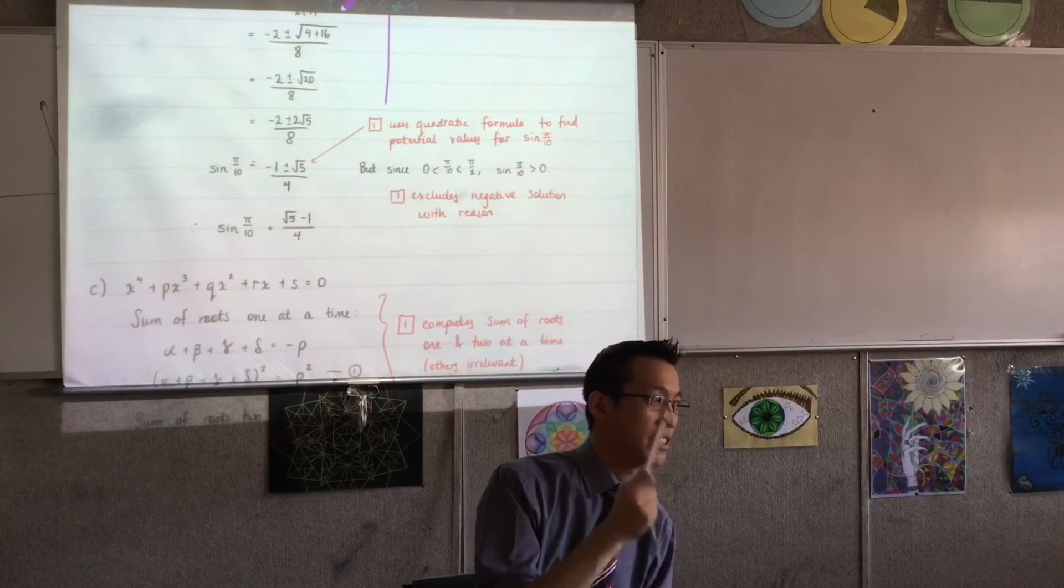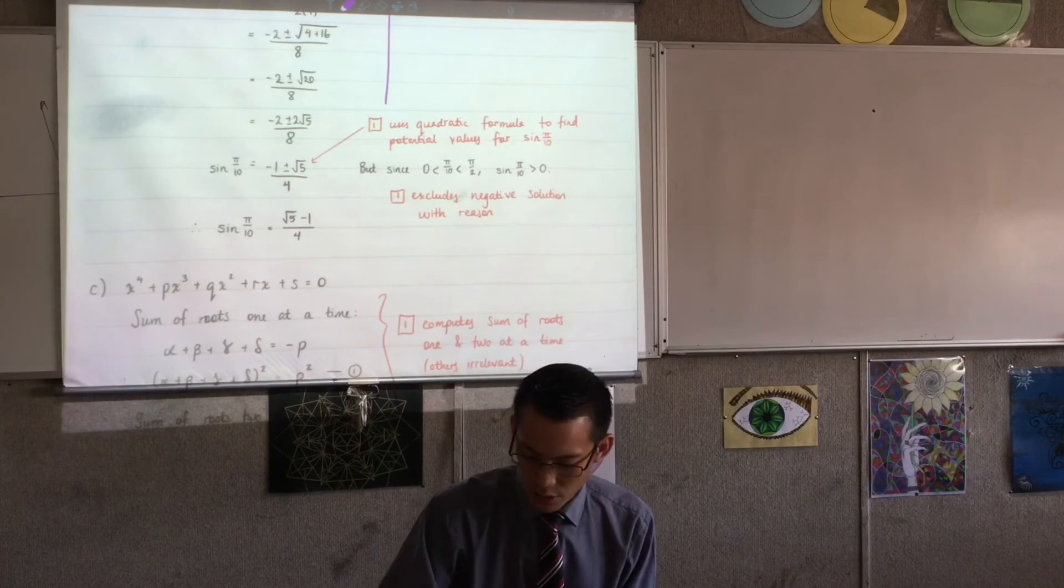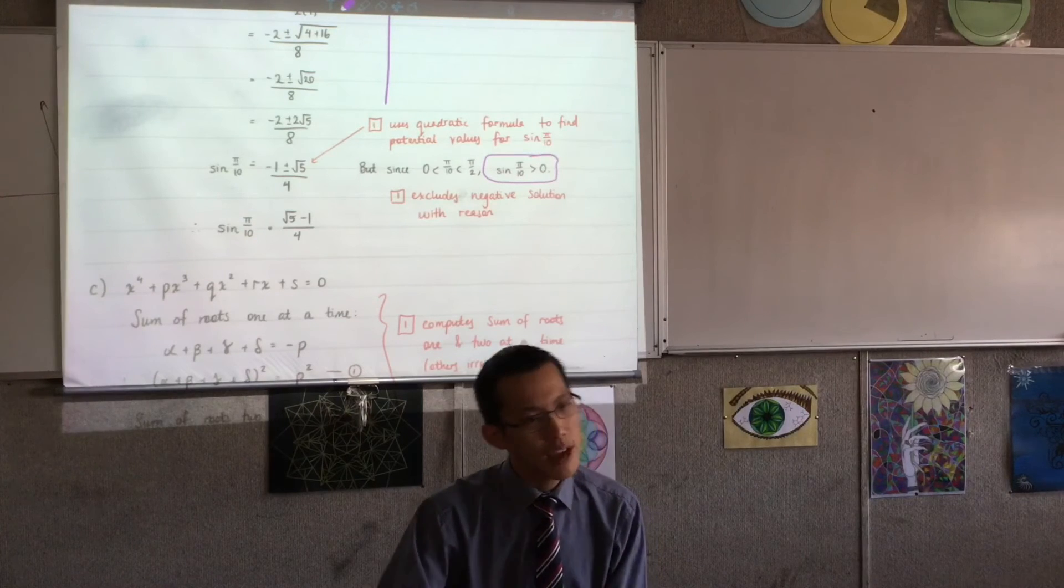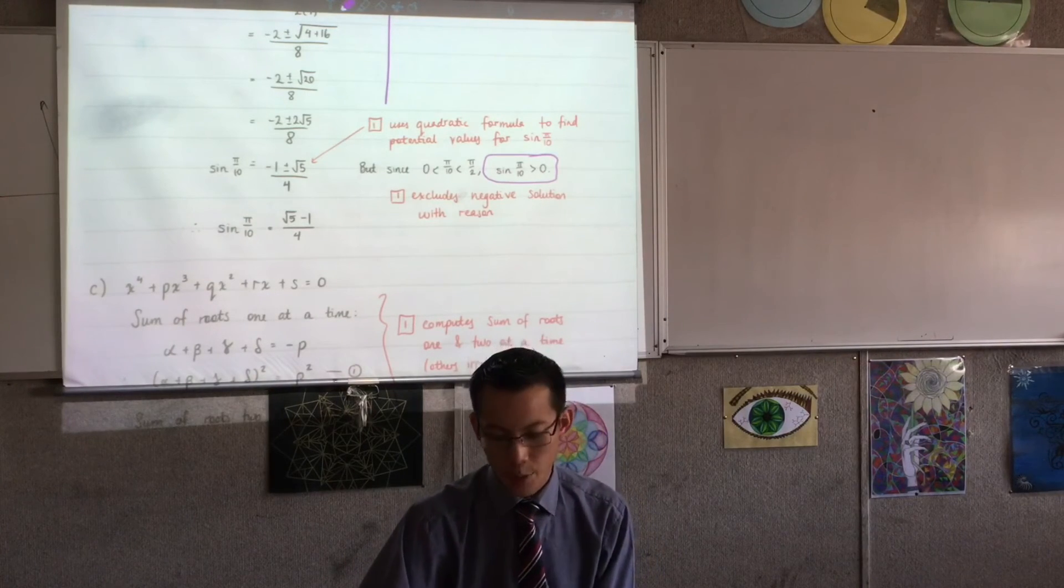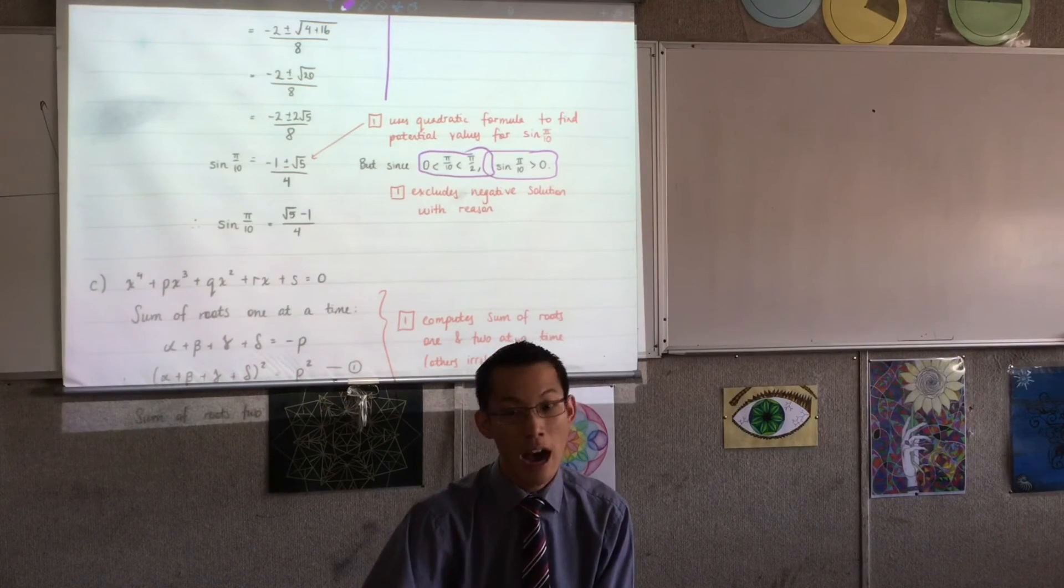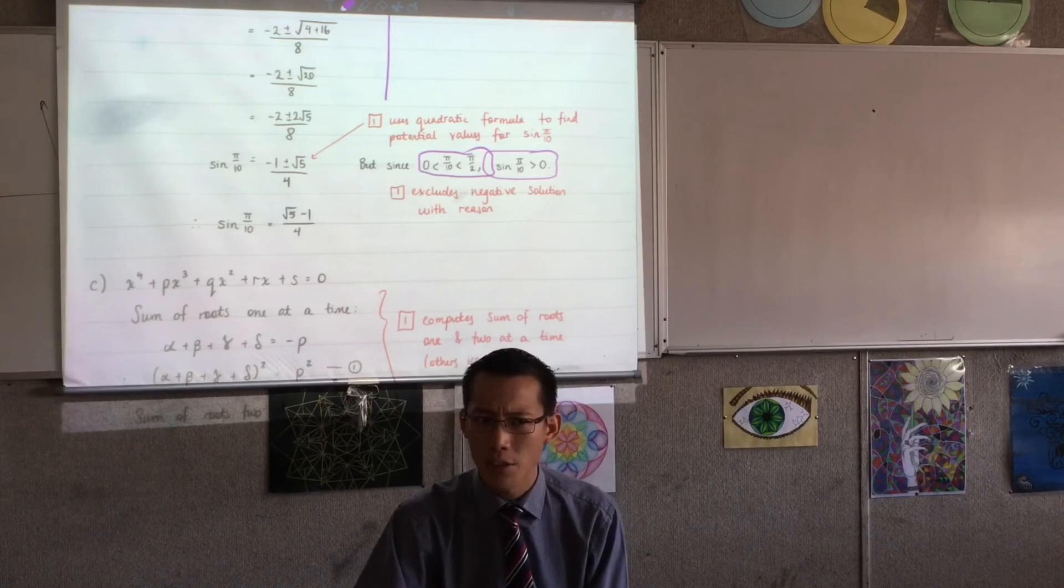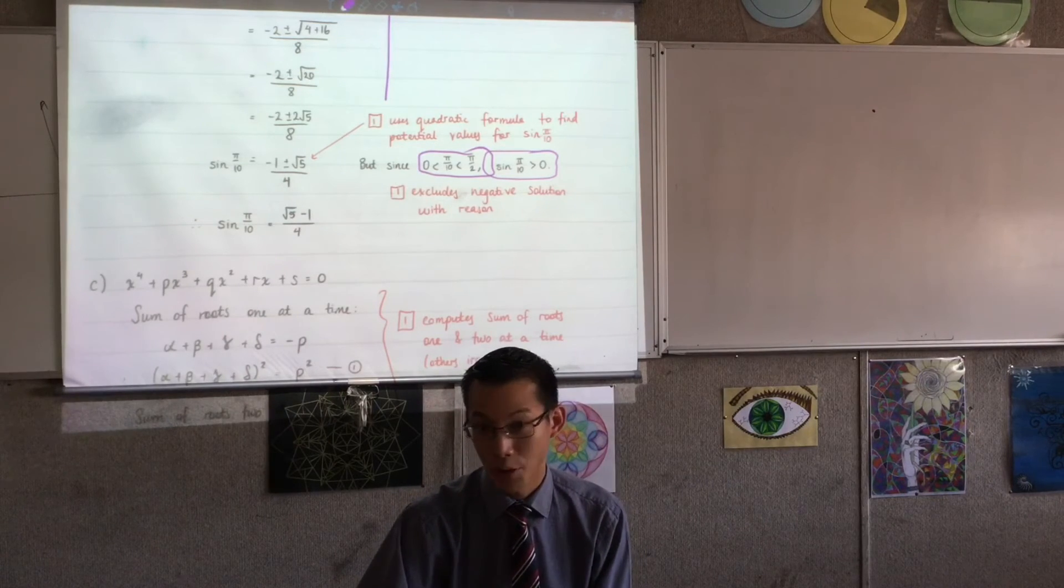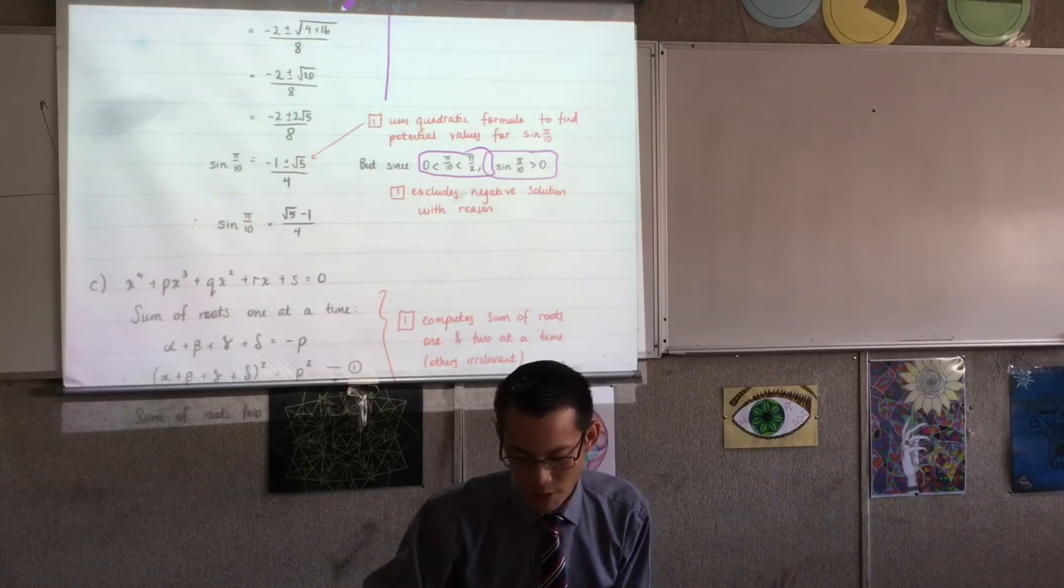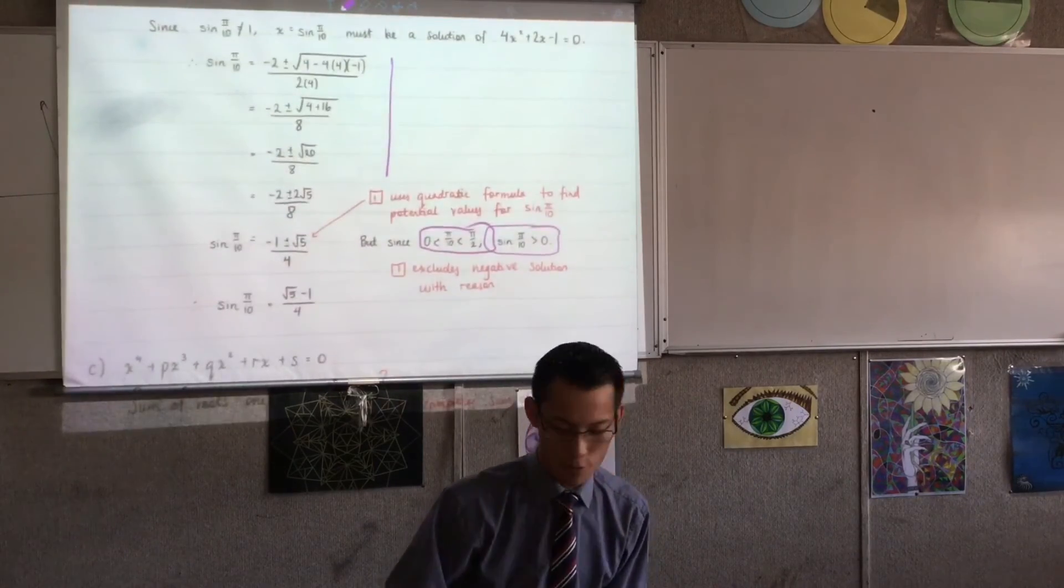And just like before, I must exclude a solution. I'm excluding this solution here, the negative one, because sine π/10, it's in the first quadrant. You could have said first quadrant. You could have said acute. You could have said it with this inequality language that I have done. Any of those are fine, so long as you actually give me a reason for why it's not the case. Like you can't just say because I don't want it to be, right? Give me a reason why. You exclude that, and that's where your second mark came from.